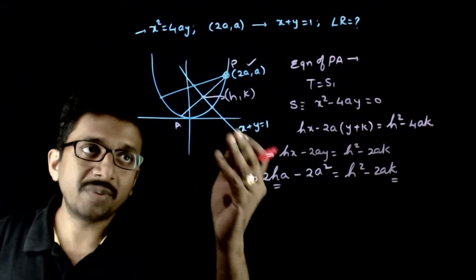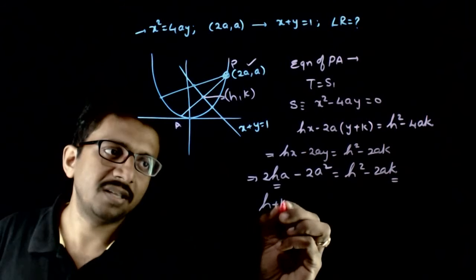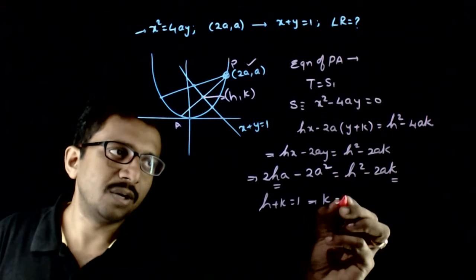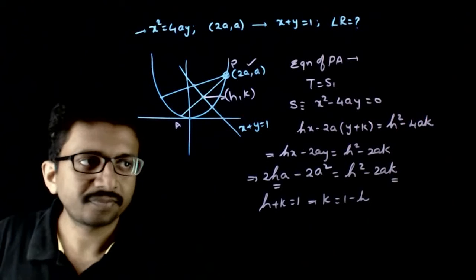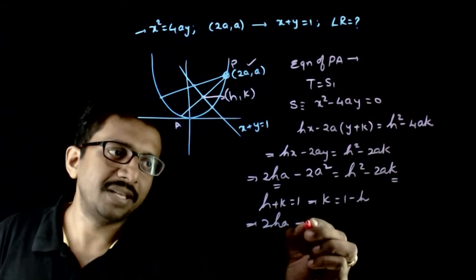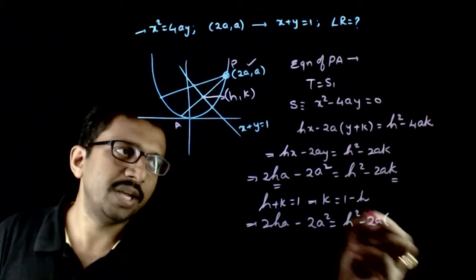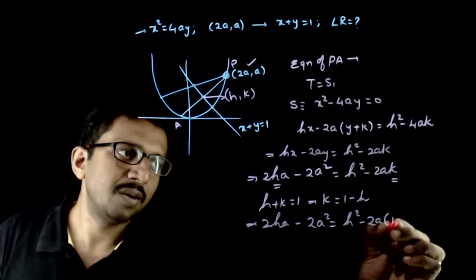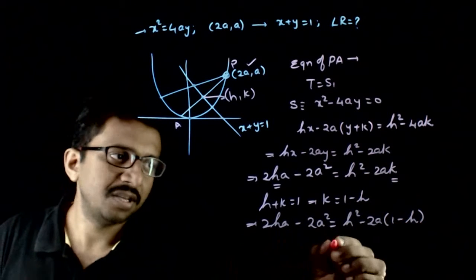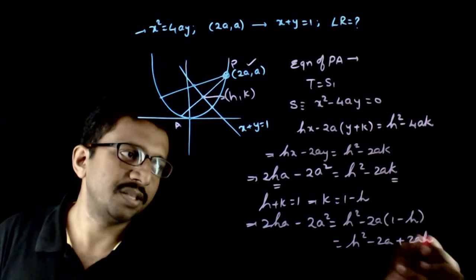We also know that (h, k) lies on the line x + y = 1. So h + k = 1, which gives us k = 1 - h. We will substitute this into our earlier condition.